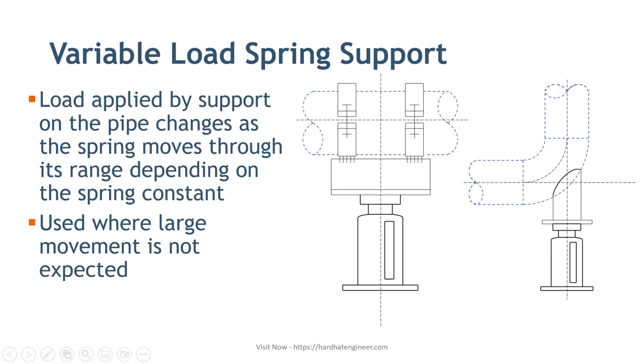In variable spring load supports, the load applied by the support on the pipe changes as the spring moves through its range, depending on the spring constant. Variable load is like driving manually — you continually adjust your speed depending on road condition. This type of support is used where large movement is not expected.